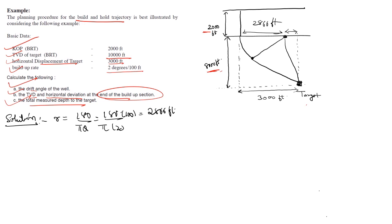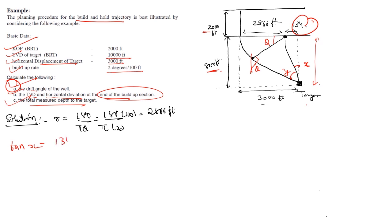This will be equal to 3000 minus 2866, so this will be equal to 134 feet. Let this be x and let this be y, so this would be my right angle triangle. We know this will be the drift angle or theta — if this is theta, then this will also be theta. To find the drift angle, let's first calculate tan x: tan x will be equal to 134 upon 8000, so x will be equal to 0.96 degrees.